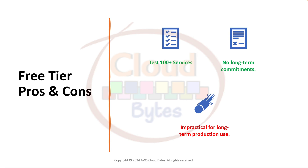Let's look at the free tier. There are three types of free offers from AWS. First, free trial — short-term trials of various services, after which standard rates apply. Second, 12 months free — free usage for 12 months after sign-up, up to a usage limit, after which standard rates apply. Third, always free — services offered free for an indefinite period, up to a set limit.